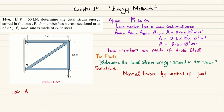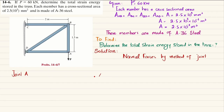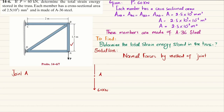At joint A, due to the load, there will be tension in member AB, so member AB will exert a force upward at point A. Member AD will exert a force in the horizontal direction at point A. We draw the free body diagram: load P = 60 kN acting downward, force F_AB acting upward, and force F_AD acting horizontally.